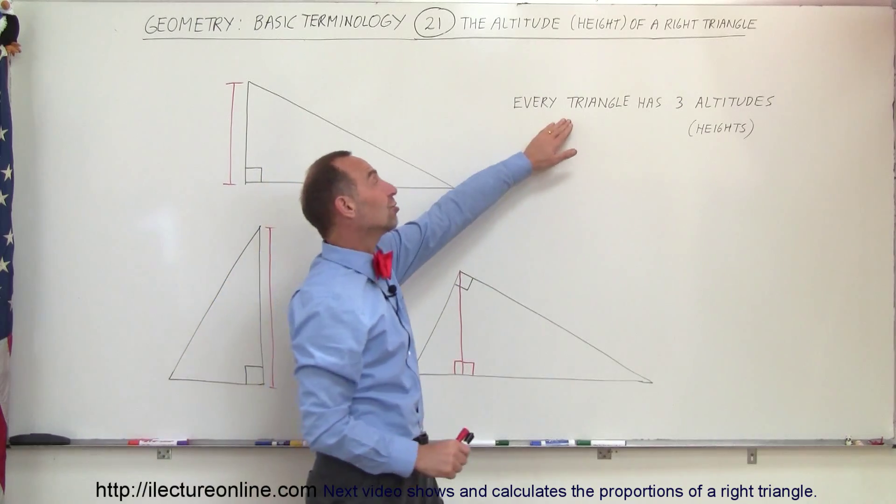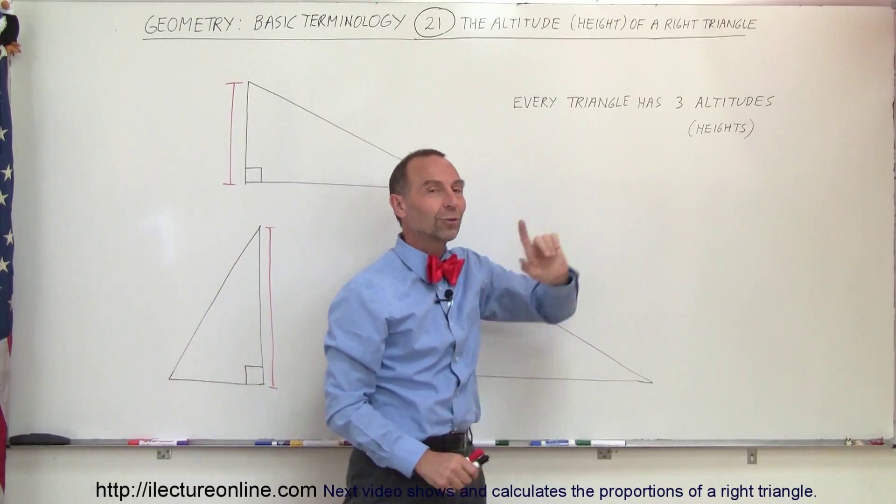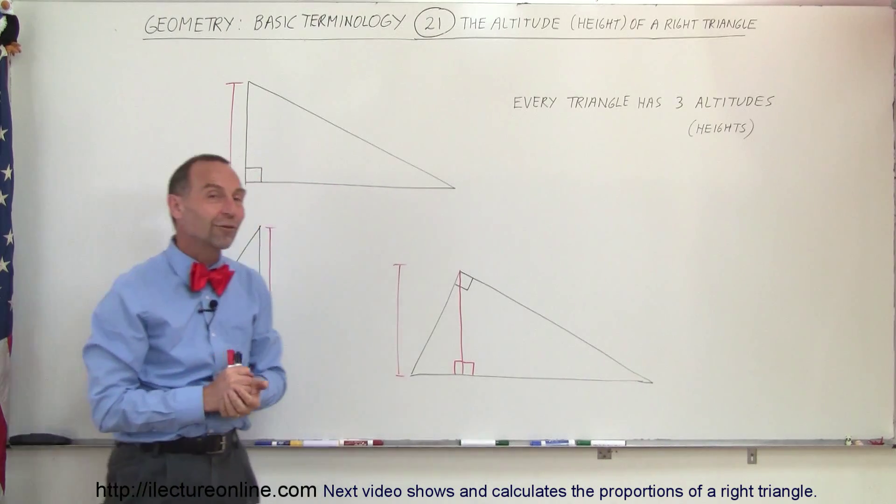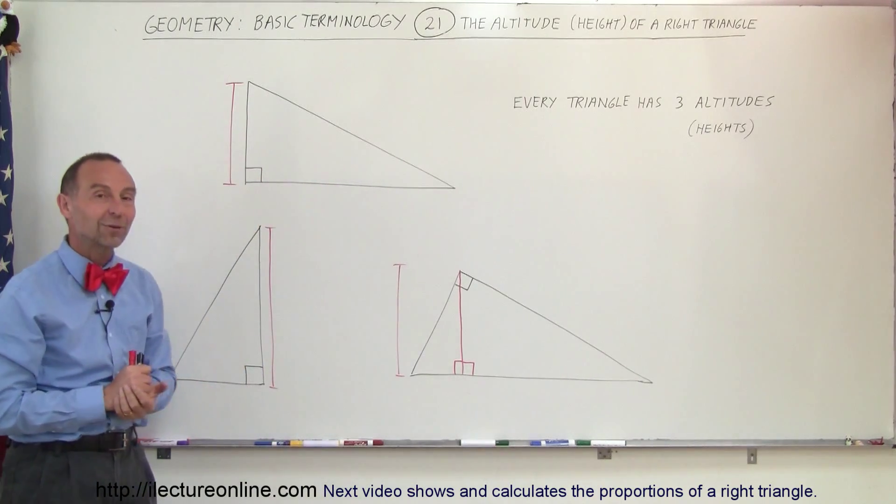Notice that every triangle has three altitudes, so in the case of a right triangle, this is how we have to look at the heights or the altitudes of the right triangle, and that's how it's done.